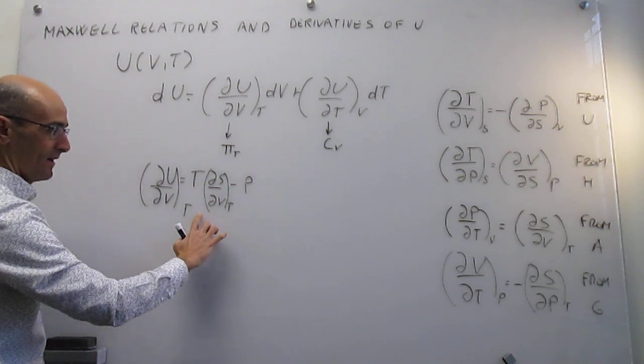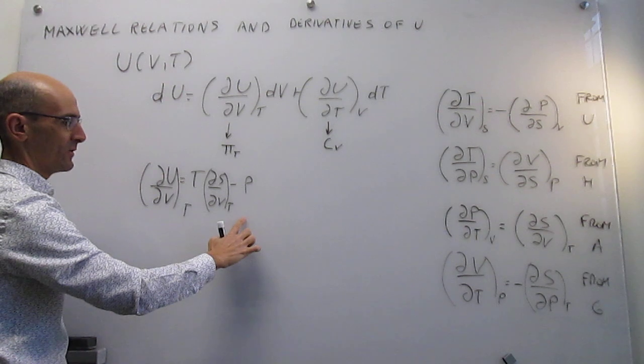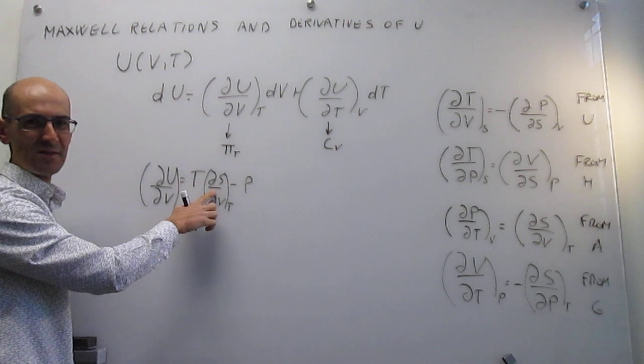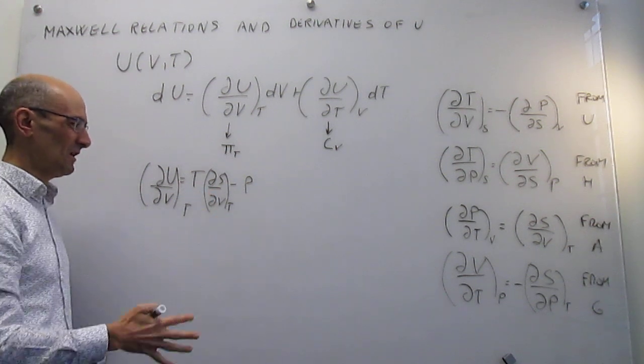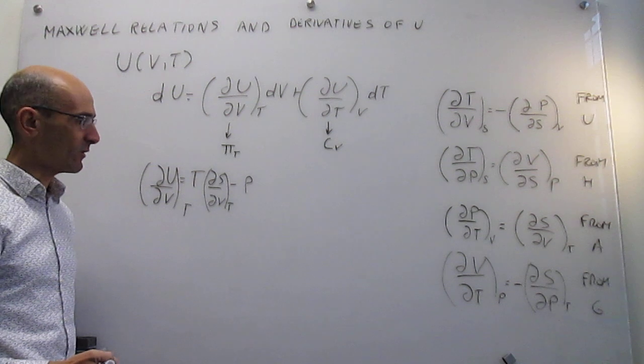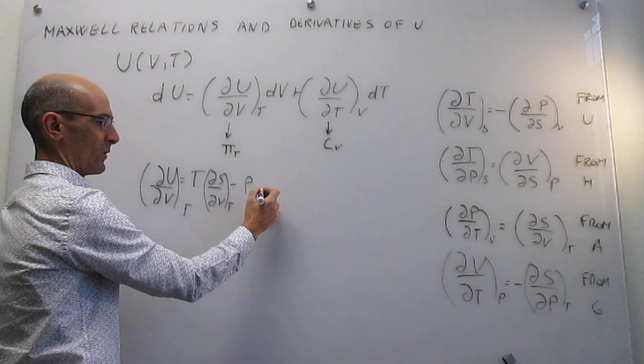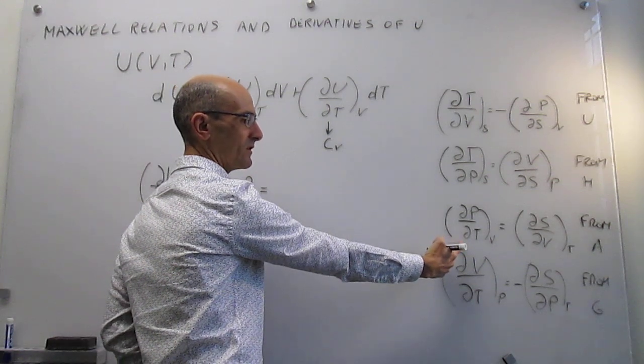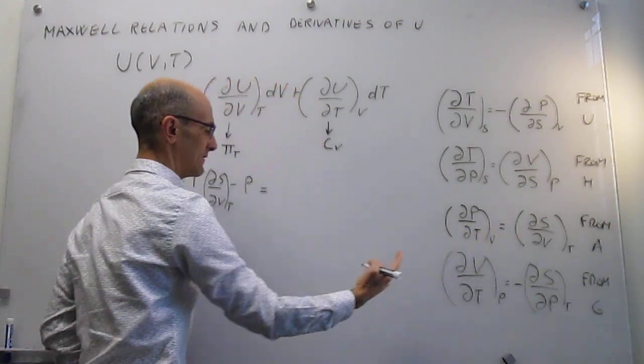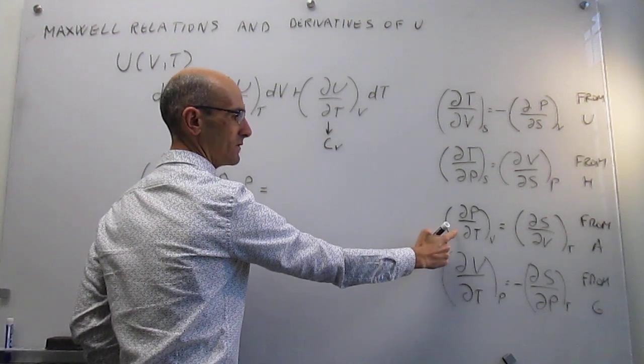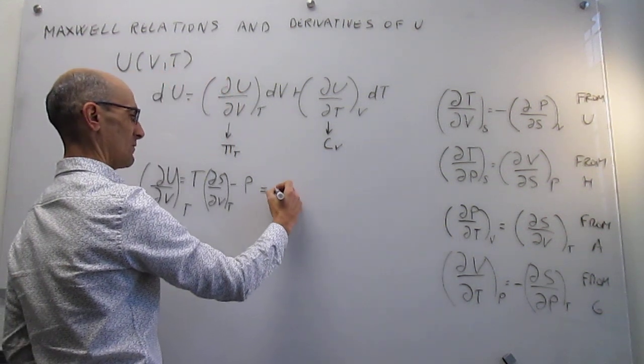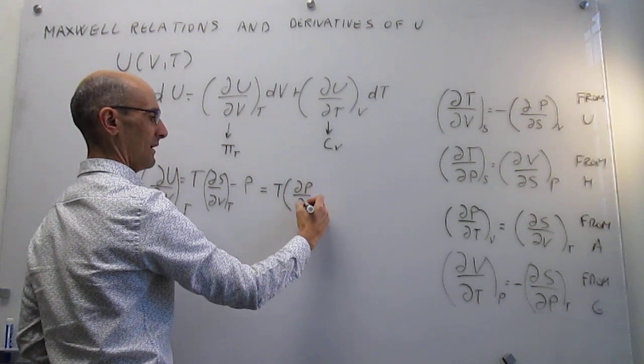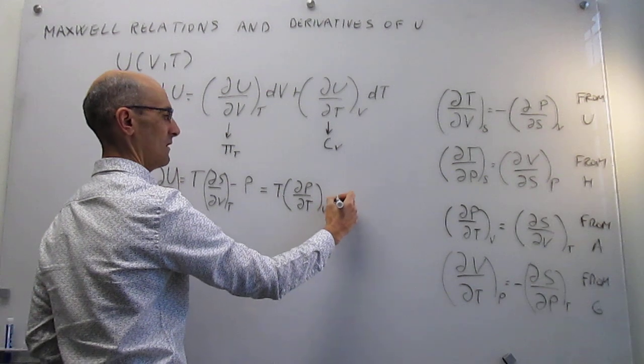Great. We now have a different definition of what the internal pressure is. This looks like it's not useful either because you have here a derivative that is just how the entropy changes with volume. It looks like we haven't made much progress, but of course that's where Maxwell relations come in handy. If we look at the Maxwell relation from the energy, now we have that this derivative that is here can be equated to this one.